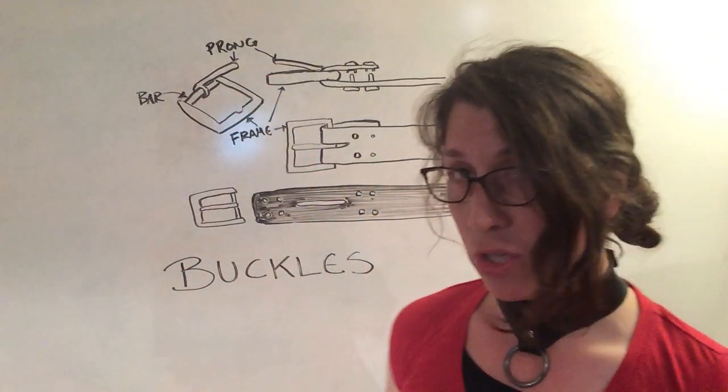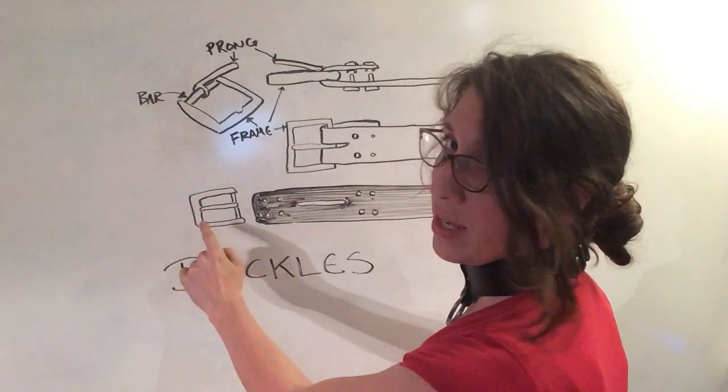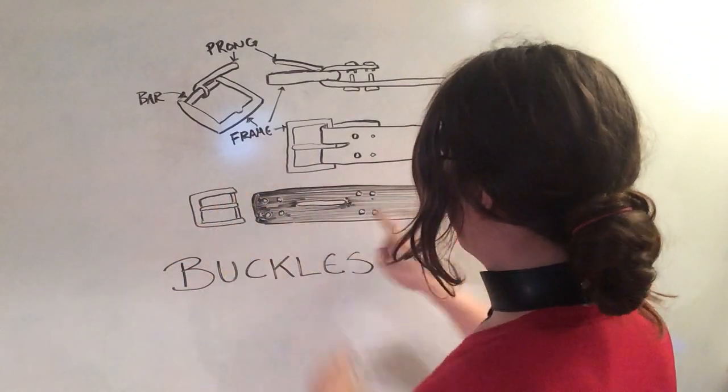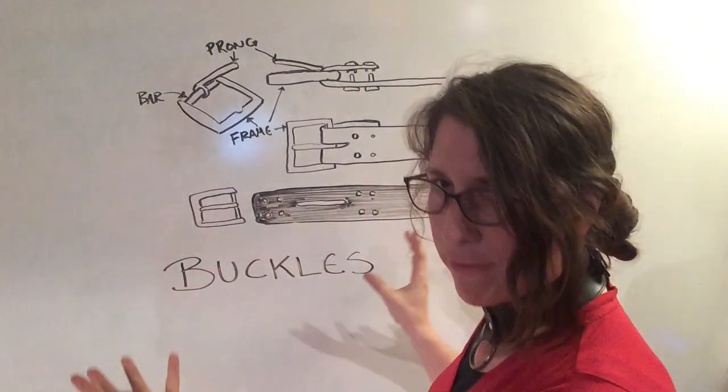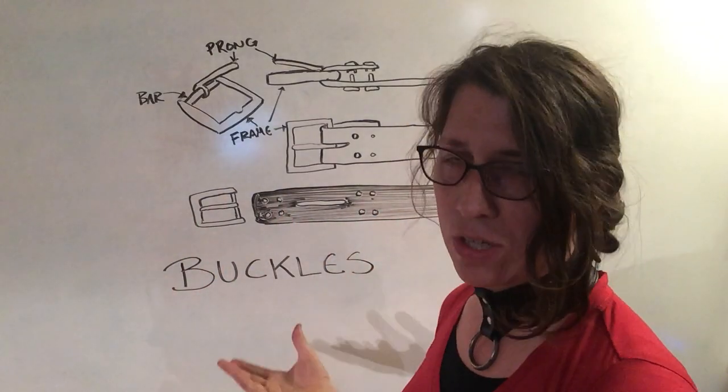So you end up with two components. You have your frame, bar, and prong, and then you have this piece of leather that has a slot cut and anywhere between one and four holes, depending on how you want to do the assembly.